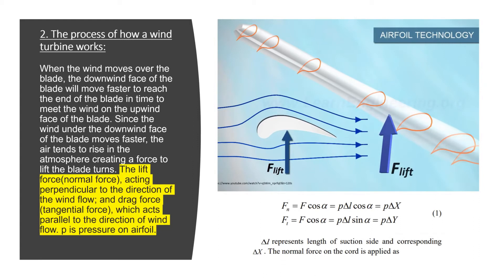The lift force is the normal force acting perpendicular to the direction of wind flow, and the drag force is the tension force which acts parallel to the direction of wind flow. At the bottom right of the screen is the equation for the forces acting on the blade: Fn is the normal force and Ft is the tension force. Delta L represents the length of the section size with corresponding delta X and delta Y, and P is the pressure on the airfoil.